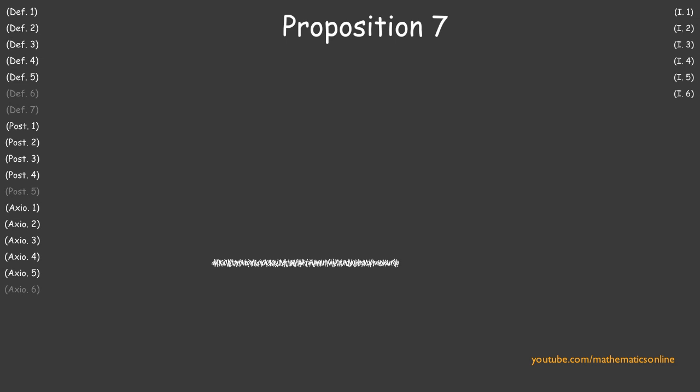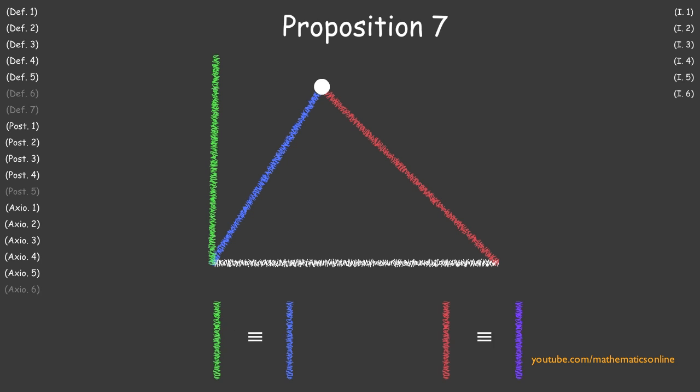In Proposition 7 we prove that with any straight line, if two lines are drawn from both ends meeting at a point, and if we have a second set of lines drawn at the same ends congruent to the first two lines, then the point at where the lines meet will always be the same.